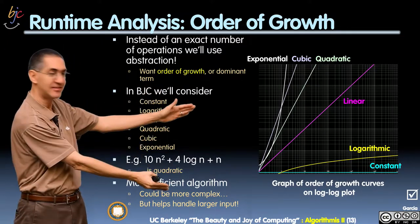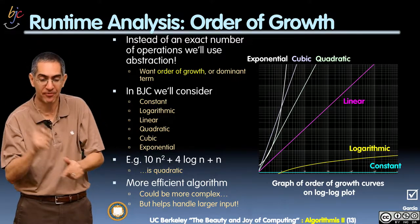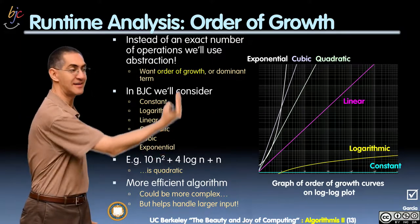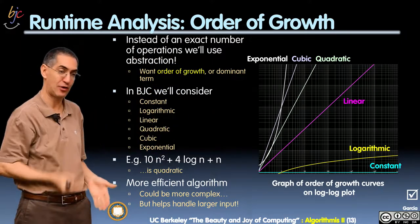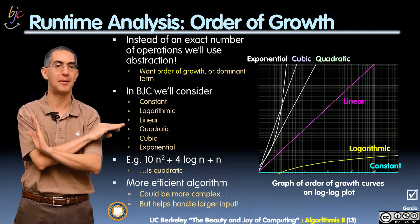And if I graph these guys in a log-log plot, notice that everybody's kind of a straight line or less, except for exponential, which as you get bigger and bigger and bigger, is going to dominate how long it takes. This is a graph of efficiency, and how many steps it's going to take. Exponential dominates everybody.